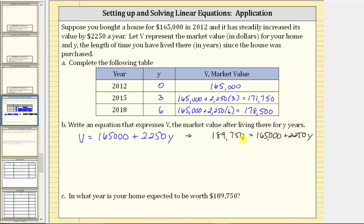To begin solving this equation, we first isolate the variable term by adding or subtracting. To isolate $2,250Y on the right side of the equation, we need to undo $165,000 by subtracting $165,000 on both sides of the equation. Whatever operation we perform on one side of the equation, we always perform on the other, so the result is an equivalent equation.